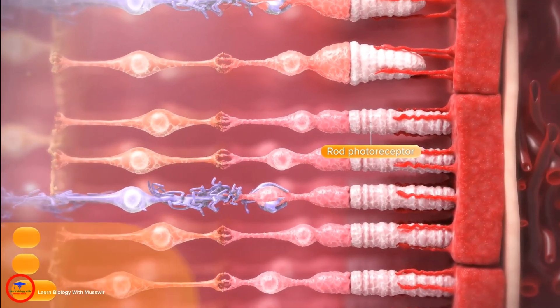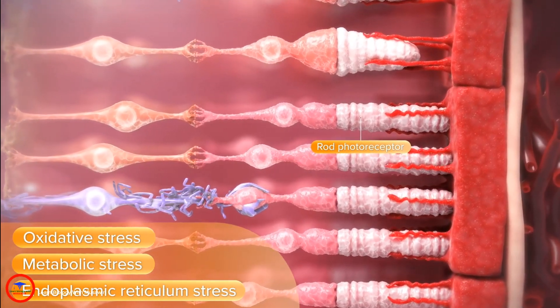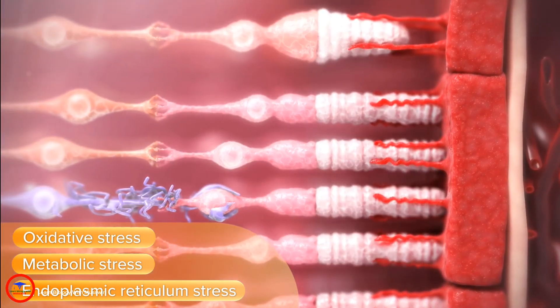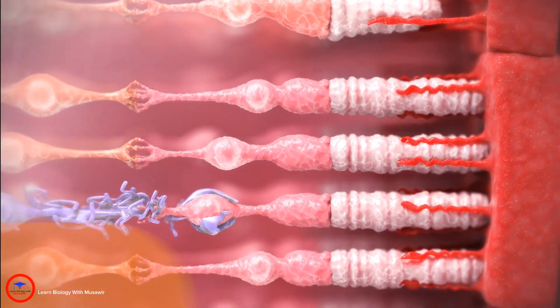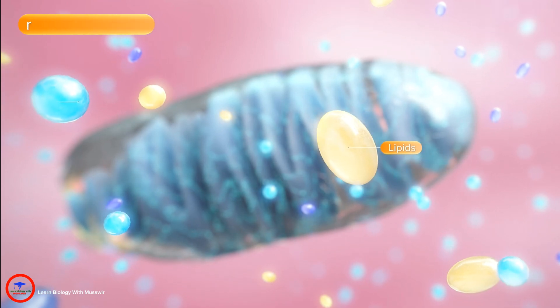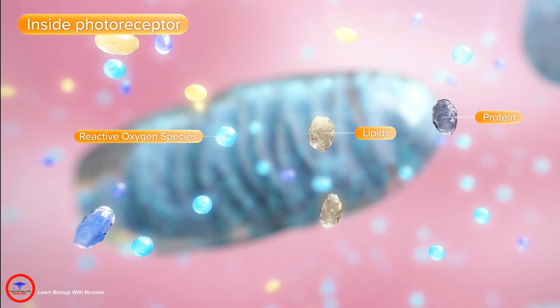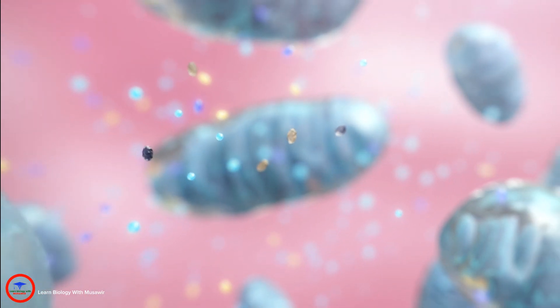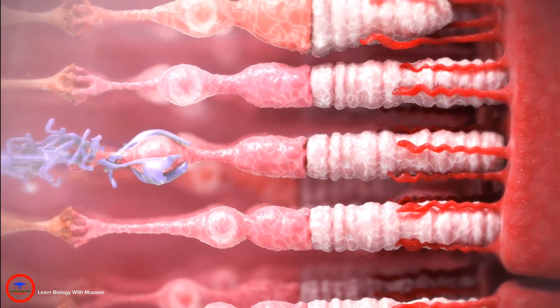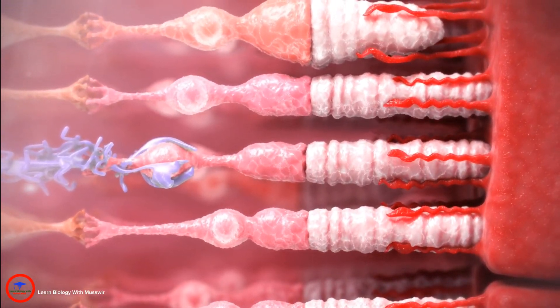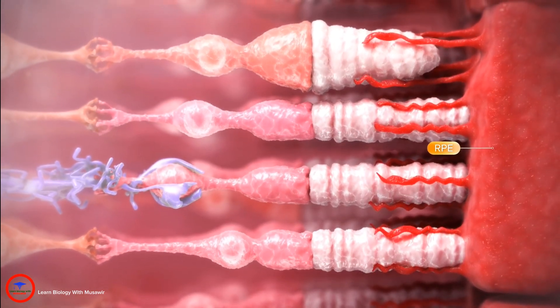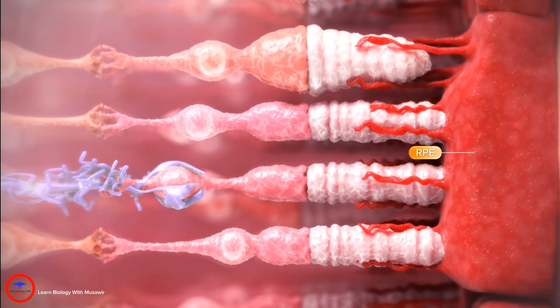Photoreceptors are subjected to intense stresses. Exposure to intense light combined with extremely high oxygen consumption causes the production of reactive oxygen species which damage proteins and lipids in the outer segments, and so 10% of this structure is phagocytosed daily by the retinal pigment epithelium or RPE.